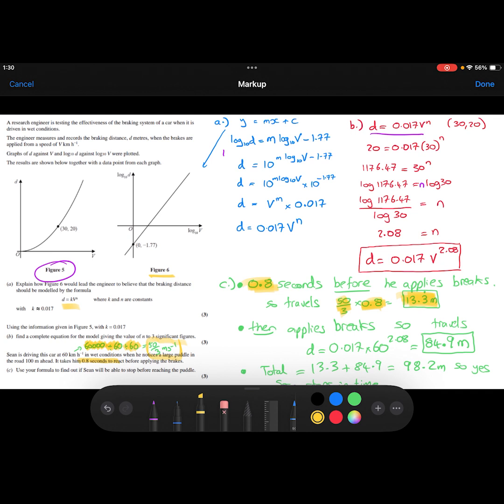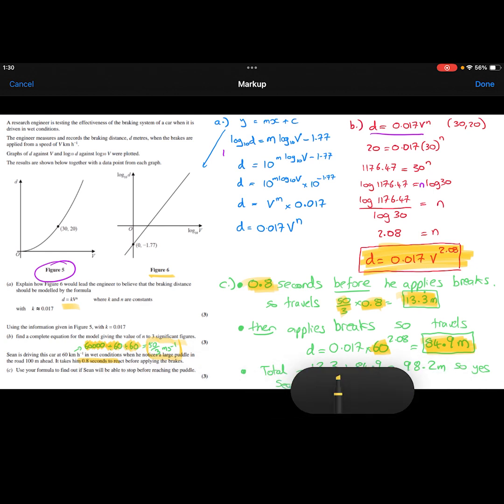Then he actually applies the brakes. And we know from our model equation that if he's traveling at 60 kilometres per hour, then plugging that into our model, we work out that he will take 84.9 metres to stop. Therefore, the total distance that Sean travels is the 13.3 metres before he applies the brakes, plus the 84.9 metres whilst he's applying the brakes. So a total of 98.2 metres, which is less than 100. So yes, Sean just stops in time just before reaching the puddle.